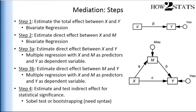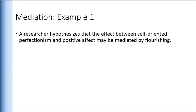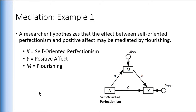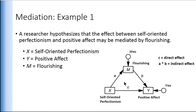Now I'll go through the steps with an example. A researcher hypothesizes that the effect between self-oriented perfectionism and positive affect may be mediated by flourishing. The independent variable x is self-oriented perfectionism, y is positive affect, and m is the mediator flourishing. With these variables and coefficients we can conduct a mediation analysis using one bivariate regression and one multiple regression, estimating the direct effect c and the indirect effect a times b.